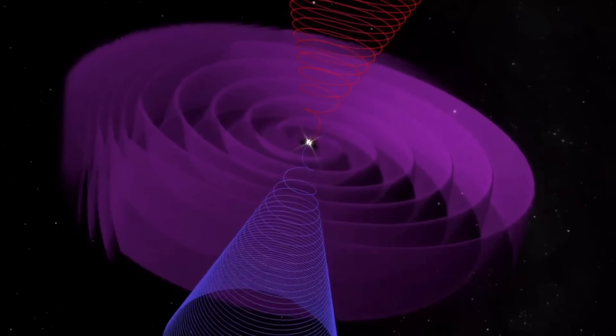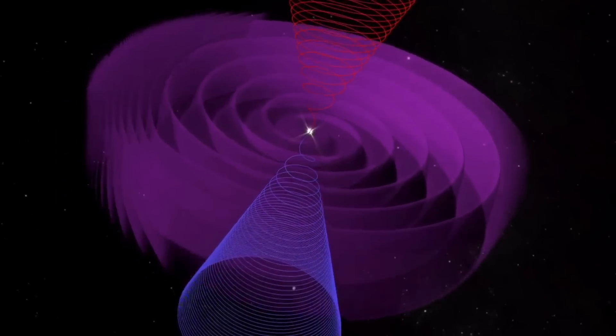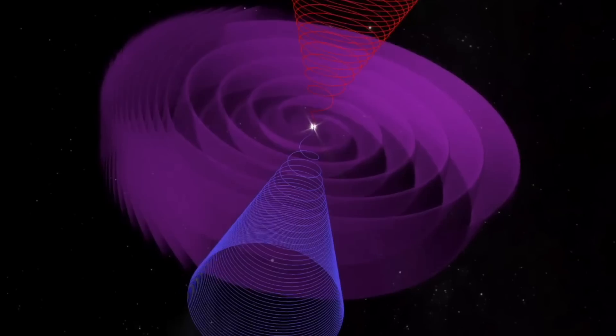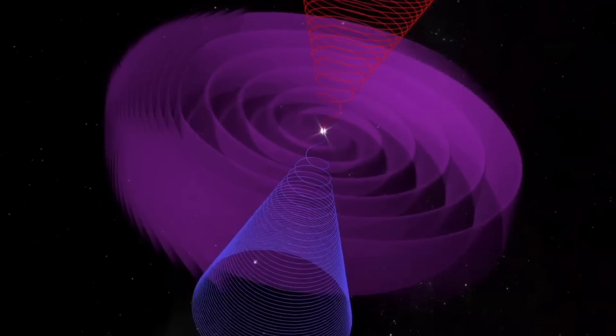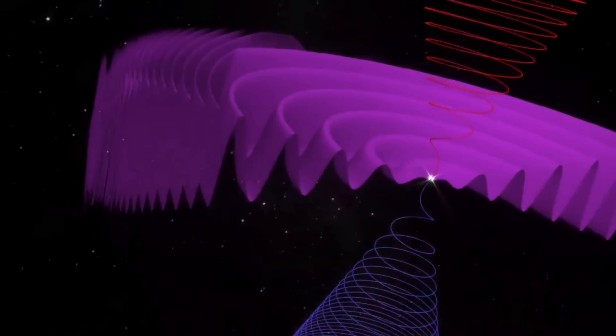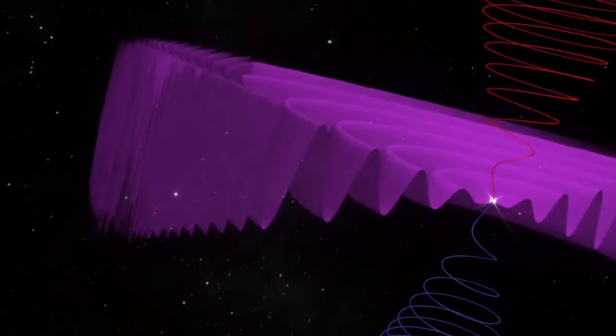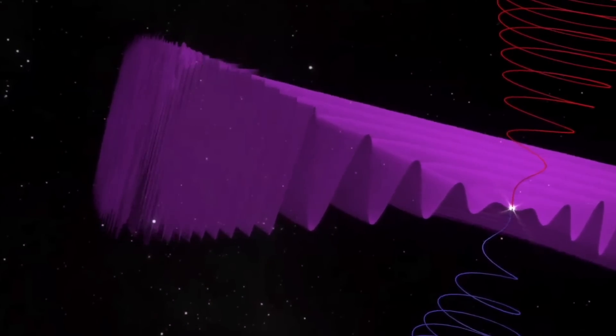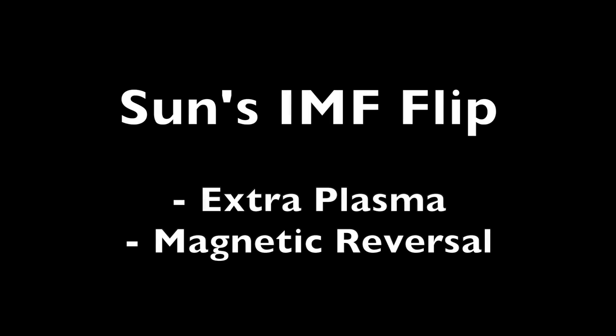This essentially means that every planet in our solar system is subject to a magnetic reversal of the solar wind magnetic field, which at Earth happens every 3 to 10 days, but most often every 5 to 7 days.